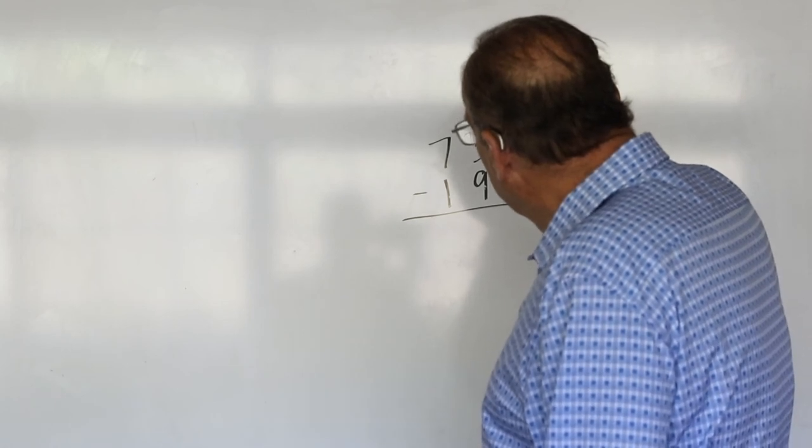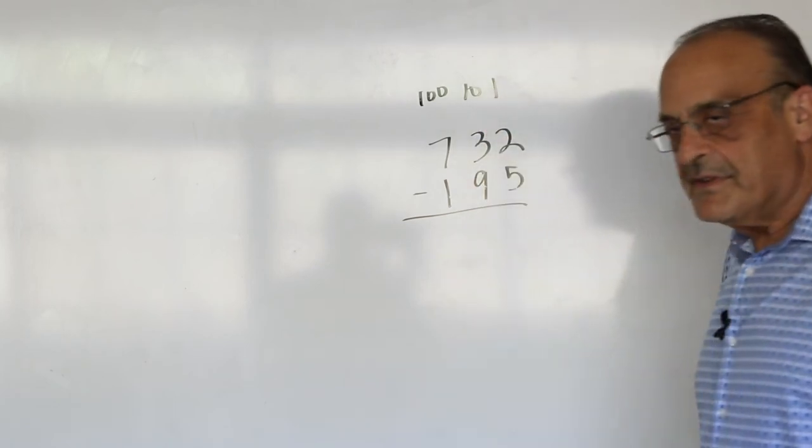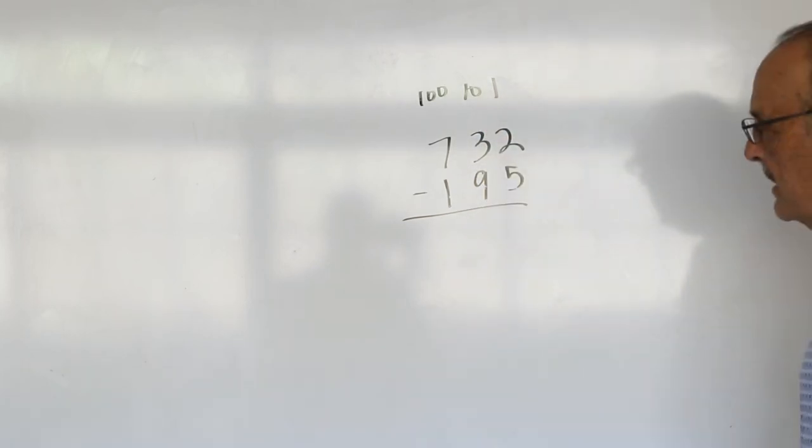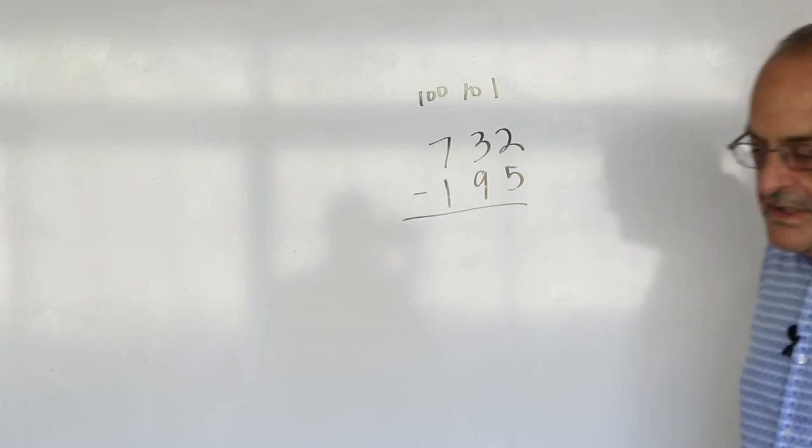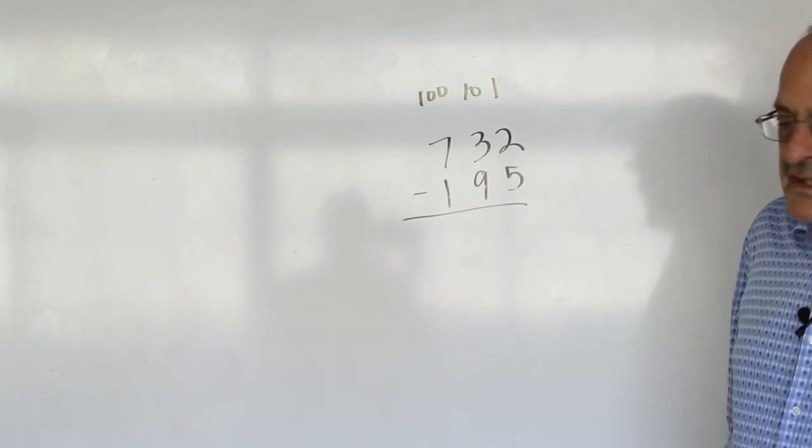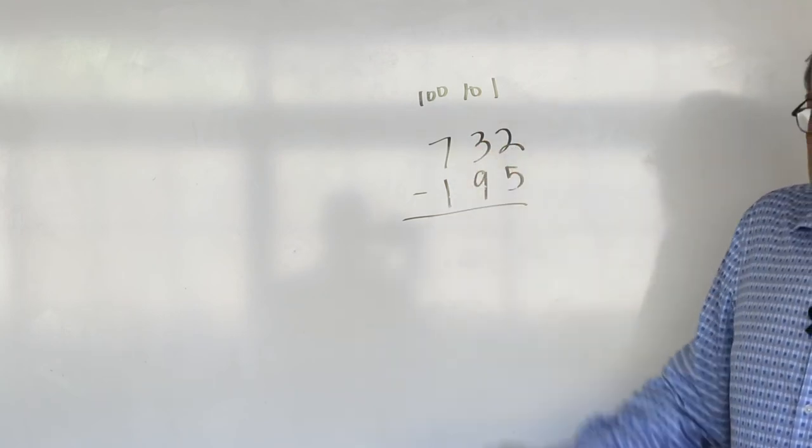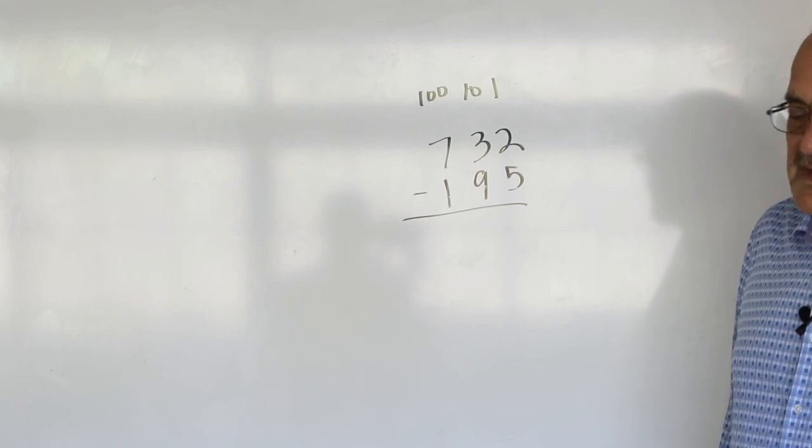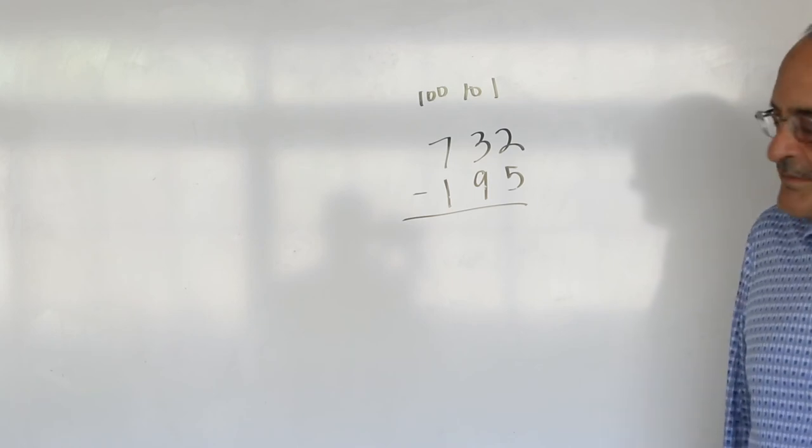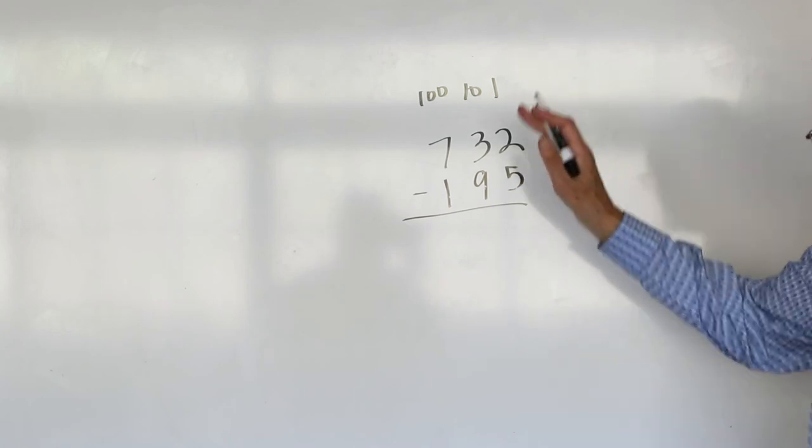So these are the ones, the tens, and the hundreds. So you can write that above so they can see the column. And they're supposed to tell the story. And there's things they're not supposed to say. They're not supposed to say, borrow. They're not supposed to say, I'm going to cross this out, make this a this, and turn this into a that. Any talk about the marks they're making, you try to stop that.